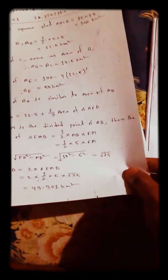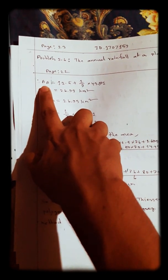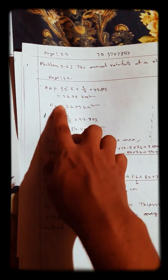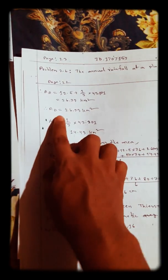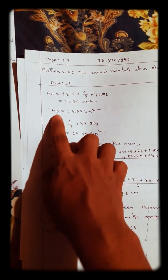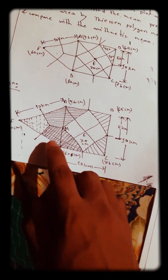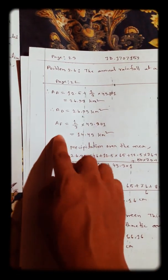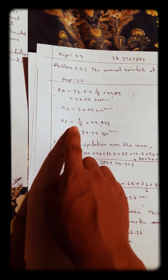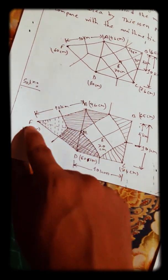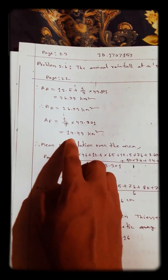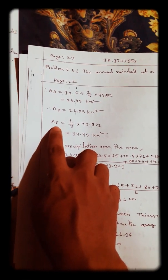The area of A equals 12.5 plus one-third of 43.301, giving us 26.93 square kilometers. Area D is similarly 26.93 square kilometers. The area of F is one-third of triangle AFD, which is one-third of 43.301, giving us 14.43 square kilometers.